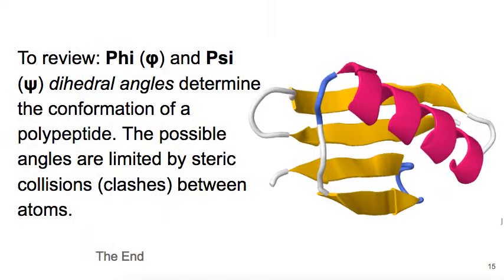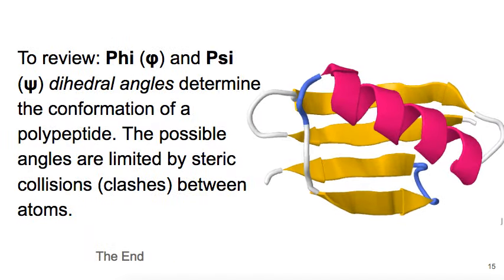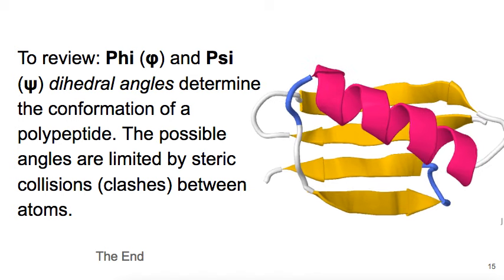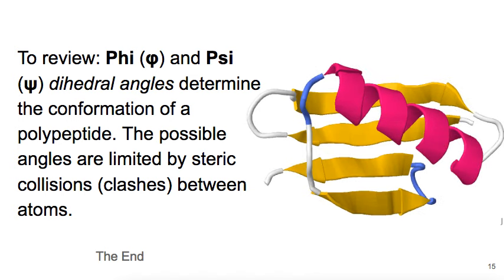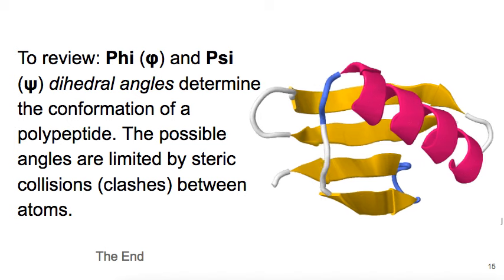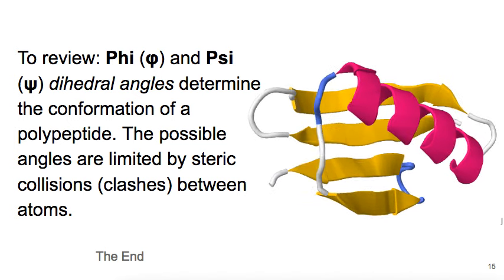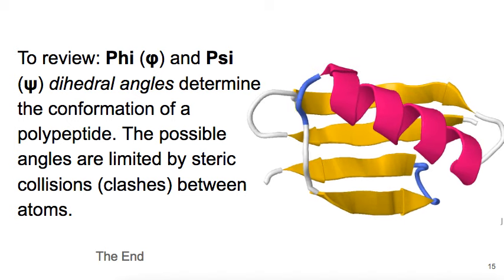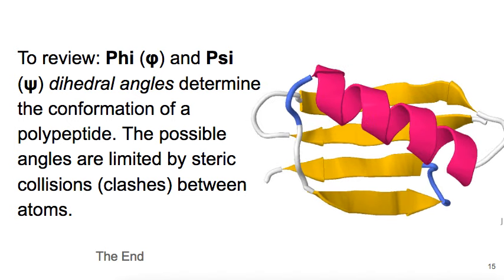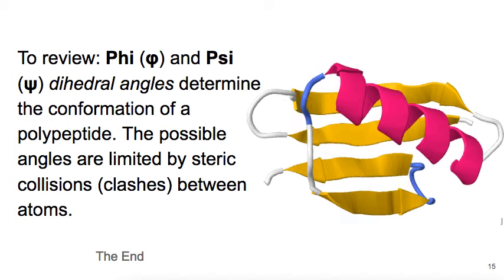In conclusion, we've seen how atomic clashes limit the possible combinations of phi and psi angles, and how the permissible combinations represent the common secondary structures of alpha helices, beta sheets, turns, and coil.